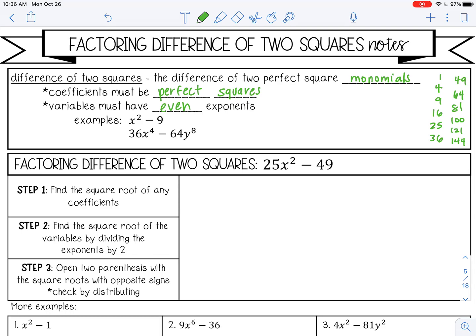So it's going to have two terms because it's the difference of two squares. It's going to be a difference, so it's got to have subtraction. So it's going to be the difference of a monomial and a monomial. The number has to be a perfect square, and the variables have to be even exponents. So we have subtraction, we have two terms, we have perfect square coefficients, and then we have even exponents.